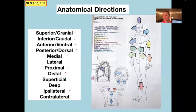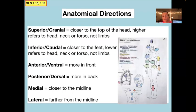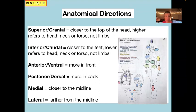Often it's not explicitly stated what the reference is. For example, a vessel might just be called the superior vena cava without saying it's superior to the inferior vena cava. Here's a picture from the anatomy coloring book that I colored myself. Superior, also called cranial, means closer to the top of the head — it refers to the head, torso, or neck, not to the limbs. They have other words for describing positions on the limbs.